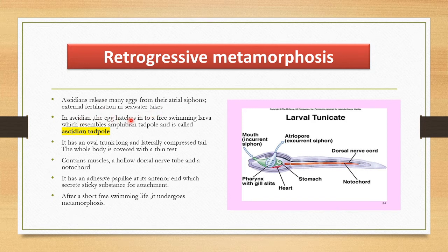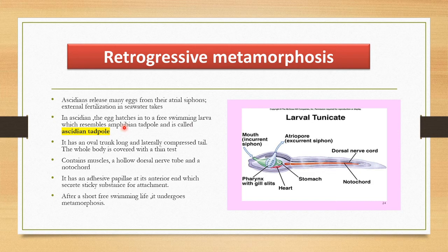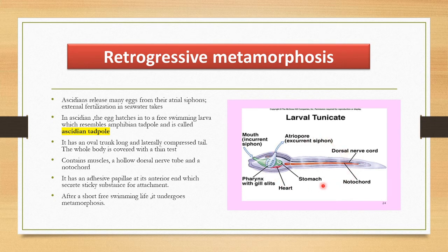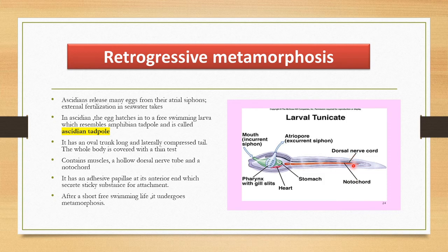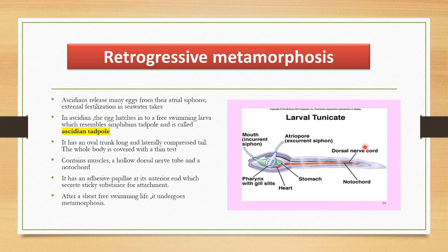Ascidians release many eggs from their atrial siphon and external fertilization happens in seawater. In ascidians, the egg hatches into a free-swimming larva which resembles an amphibian tadpole called ascidian tadpole. This is an example of what ascidian tadpole is. The larval form of Ascidia is called ascidian tadpole or tunicate larva, and looks like an amphibian tadpole.